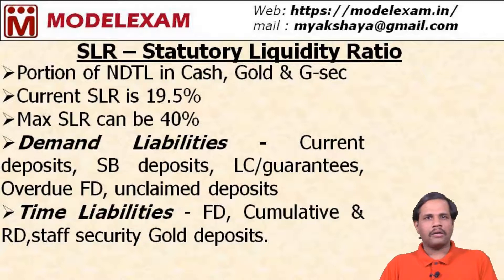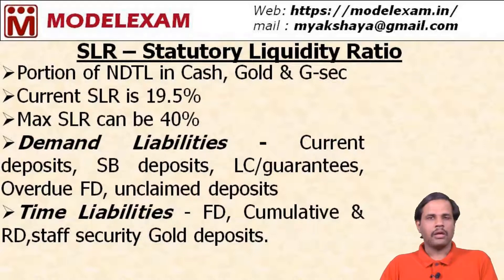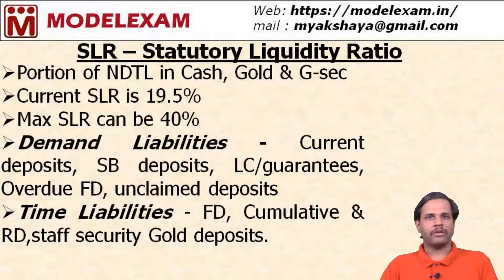SLR and CRR play a vital role in money supply and are known as reserve requirements. As SLR increases — say from 19.5% to 25% — every bank must maintain 25 rupees out of every 100 rupees in deposits as gold or approved government securities, which reduces the lending capacity of banks. So as SLR and CRR increase, money supply decreases.